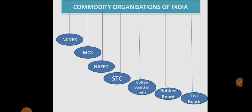Coming to NAFED — National Agricultural Cooperative Marketing Federation of India. NAFED is a cooperative organization, which means it runs with the support of both private and public sectors — it is a mix of government and private. It exclusively looks after agricultural products such as pulses, oilseeds, spices, and fruits. That is what NAFED does.